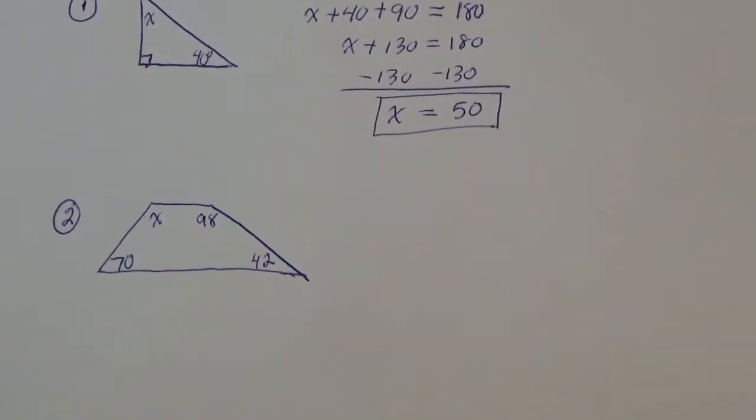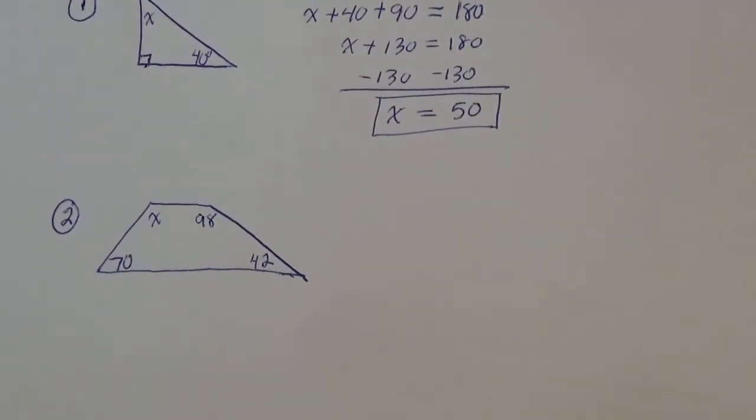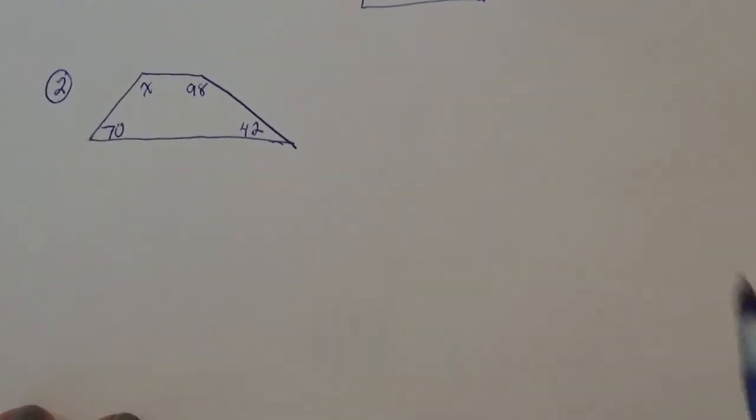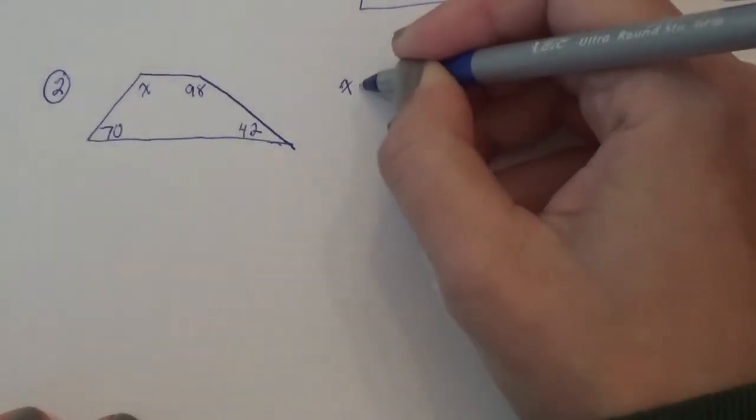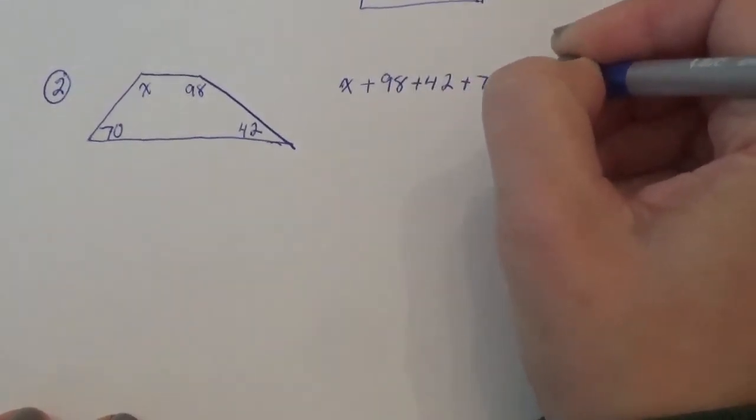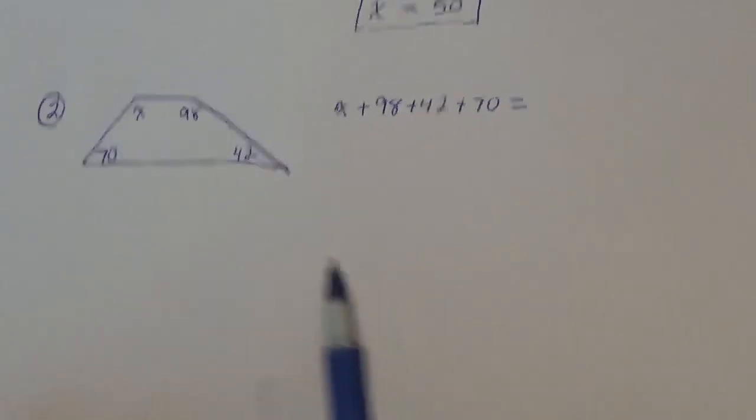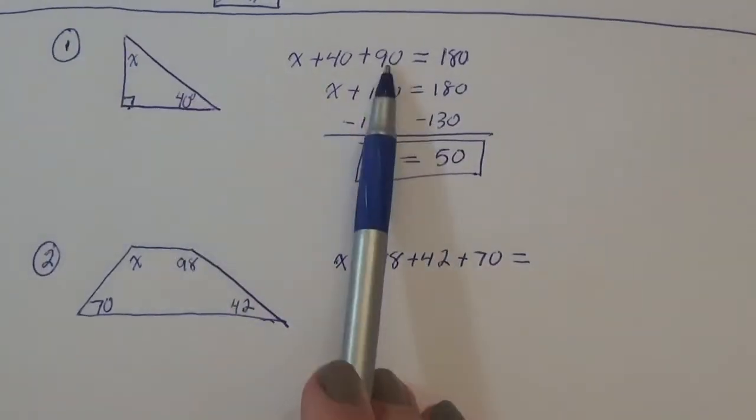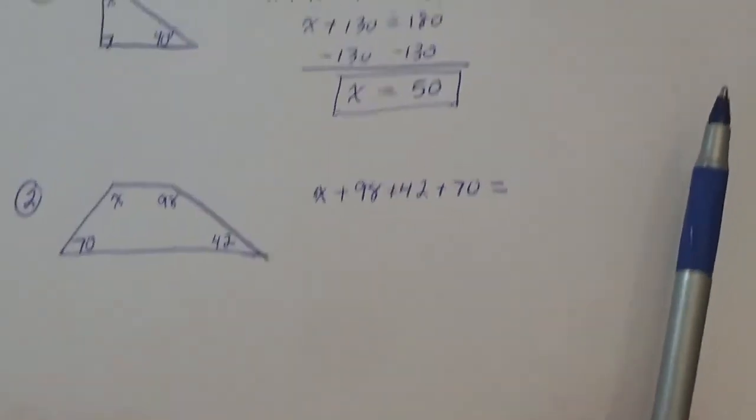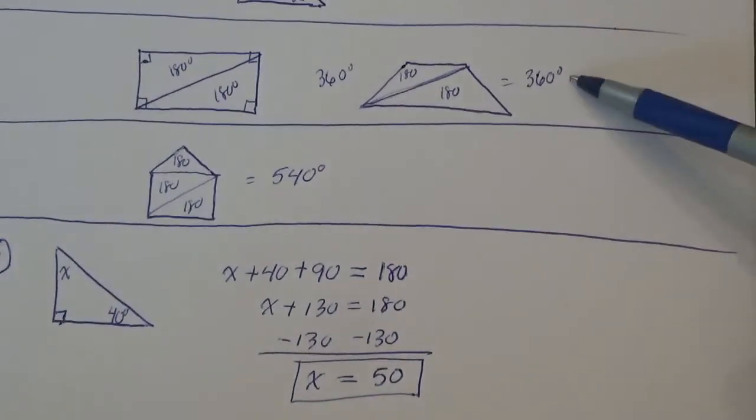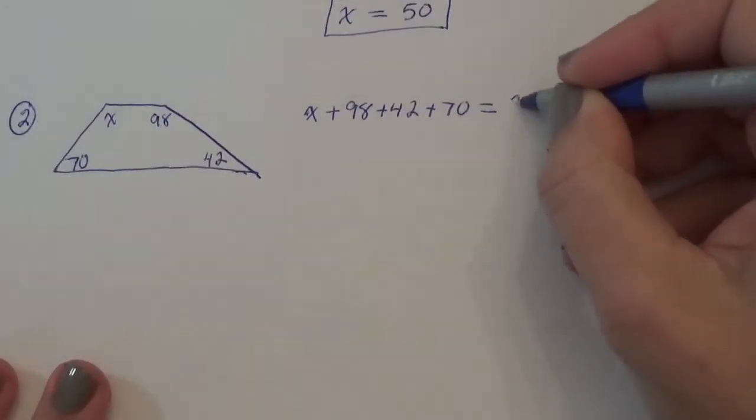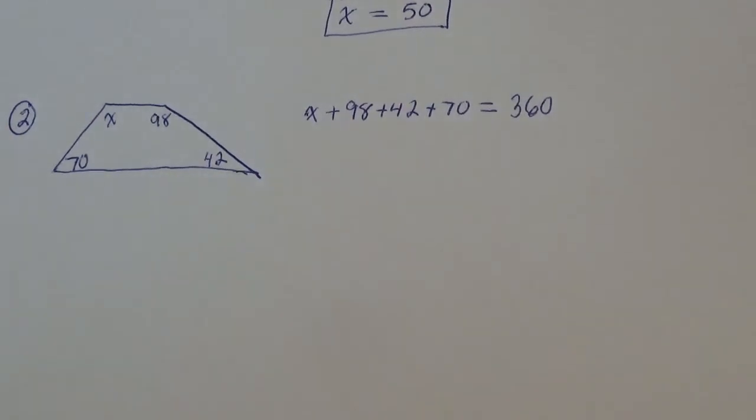Okay. So same idea. They're giving you one missing thing. They want to see your process here. So we're going to say, all right, x plus the 98 plus the 42 plus the 70 is going to equal. Be careful now. A triangle is 180. How many sides does this shape have? One, two, three, four. Any four-sided shape is going to add up to 360. Sorry if that's making you dizzy there. So just make sure you count the sides. That's all.